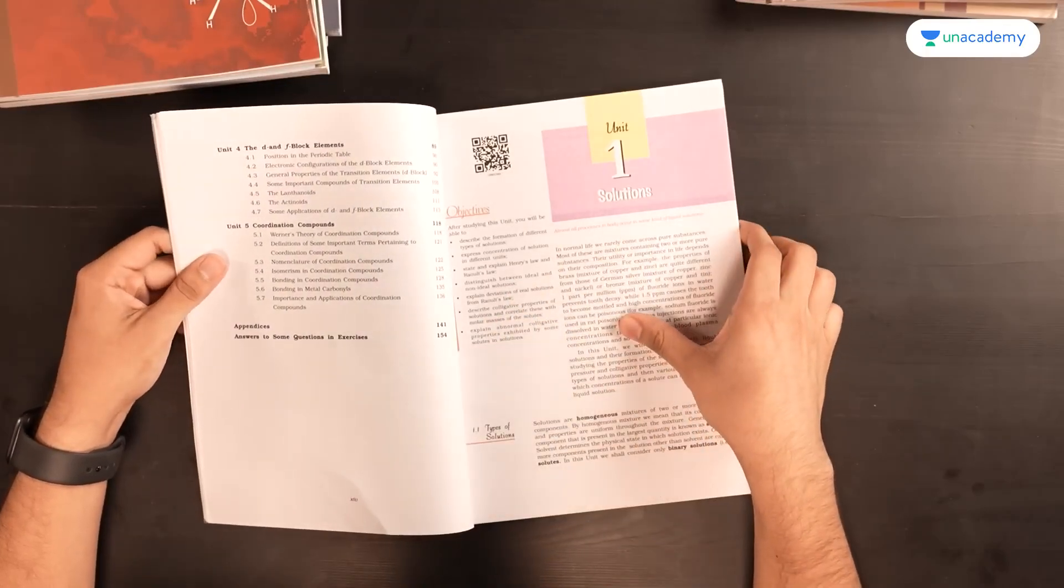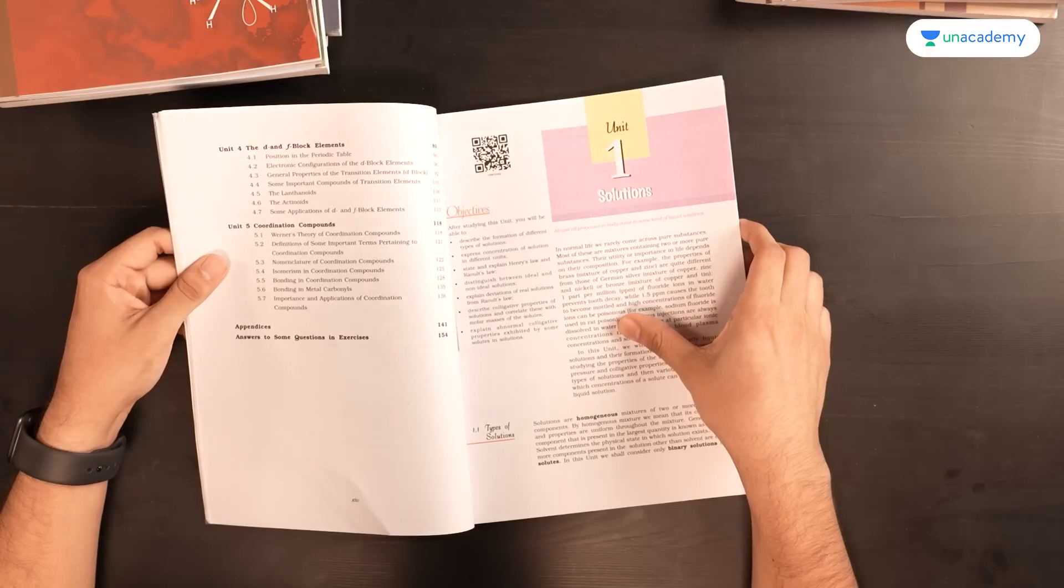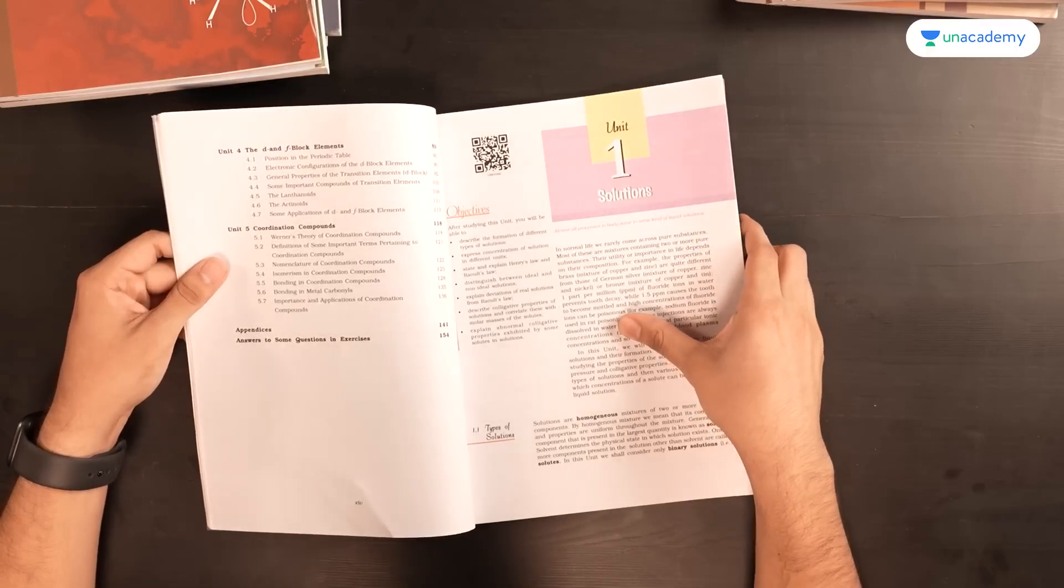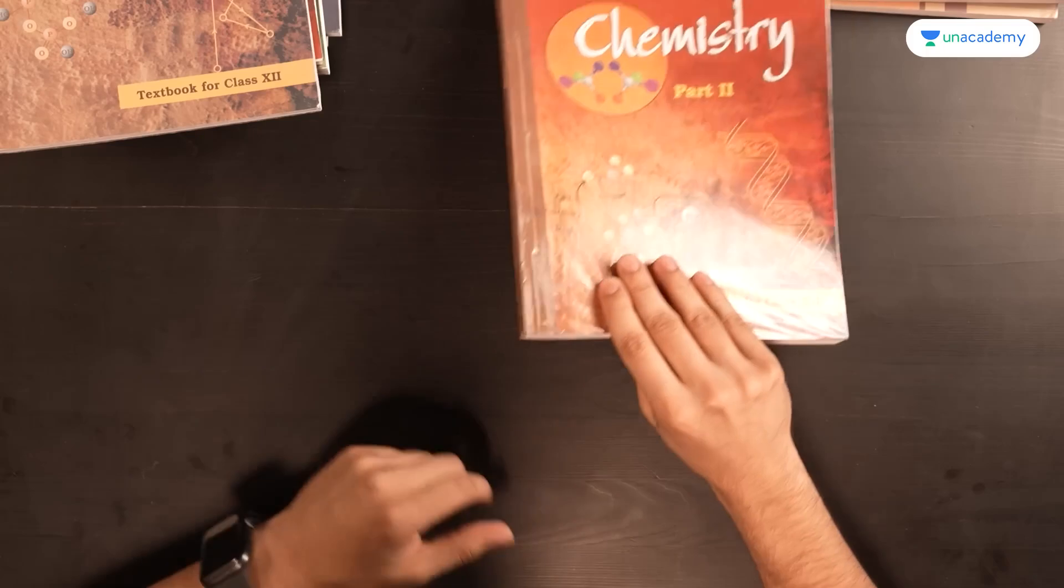Coordination compounds, again, it's a more theory-based chapter. So, you can read this from NCERT only. And I don't think any other source has to be referred for chemistry inorganic and organic rather than the NCERT.